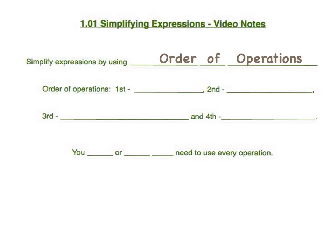The first operation you look for when simplifying an expression is distribution. Now you might be thinking, wait a minute — you just wrote parentheses, but yet you said distribution is the first operation. When we perform distribution, we are looking at the parentheses to see if there are any numbers or terms that we can distribute. So yes, when we learned order of operations, we learned the acronym PEMDAS, meaning we look at the parentheses to see if there are any terms we can distribute.